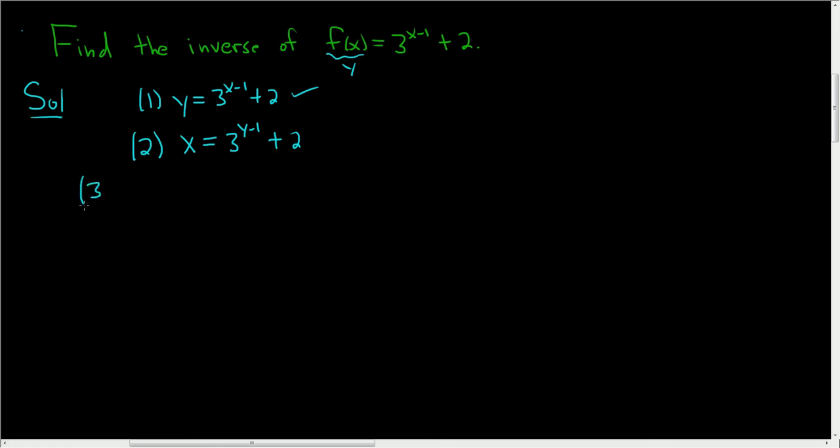Step 3 is where we actually have to solve for y. So I'm going to go ahead and write down what we have again. So x = 3^(y-1) + 2. To solve for y, we'll first isolate this term here by subtracting 2 from both sides. So we end up with 3^(y-1) = x - 2.